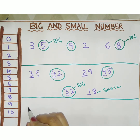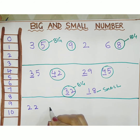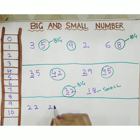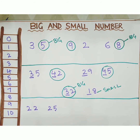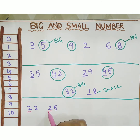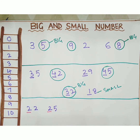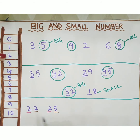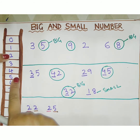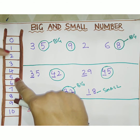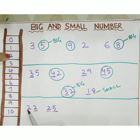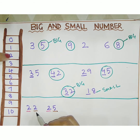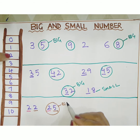If we have 22 and 25, see the first digit — both first digits are the same. So now we have to compare the second digit. The second digits are 2 and 5. Which number comes first? 2 comes first. It means 22 is the small number and 25 is the big number.